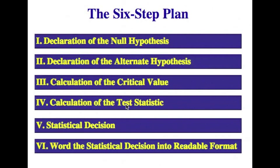Now, in order to make a statistical decision, you must examine your test statistic in light of your critical value. And you only have two possibilities. You either reject the null hypothesis or you fail to reject it. Then once you're through making that decision, you word the statistical decision into a readable format. You have to learn to speak to non-nerds if you're going to be a statistician.